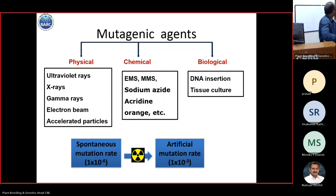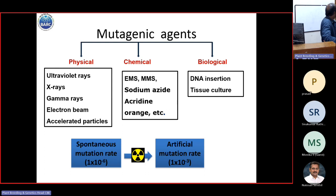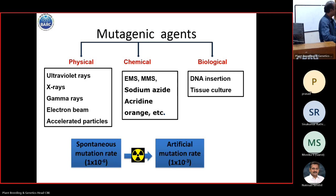There are different mutagens which can be used for inducing mutations: physical, chemical, and biological. In the physical category, we have X-rays, gamma rays, electron beams, and accelerator particles. Basically, mutation breeding is increasing the frequency of mutants in the population. In nature it happens spontaneously at a rate of one in one million, but we are enhancing the frequency to one in one thousand. That is what we are trying to do with these mutagens in the population.